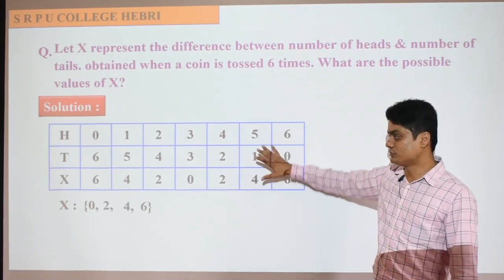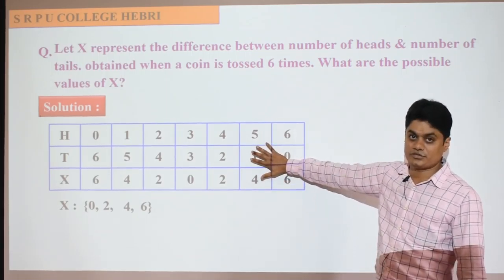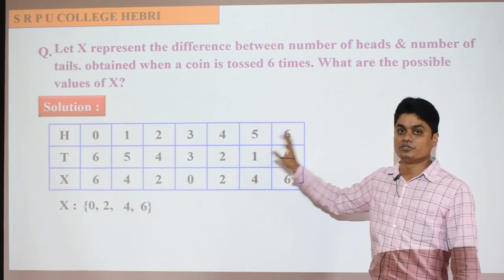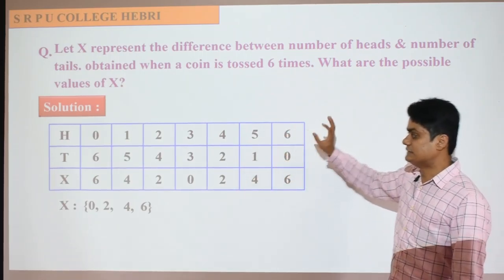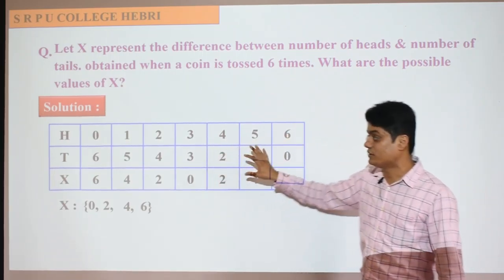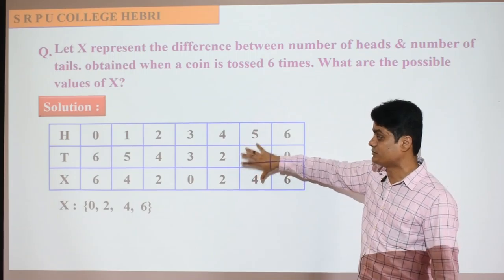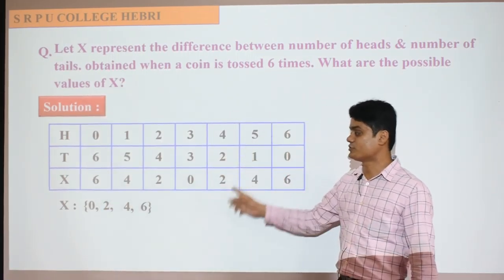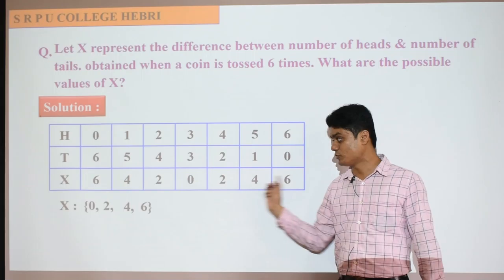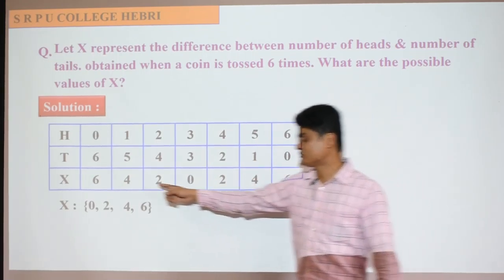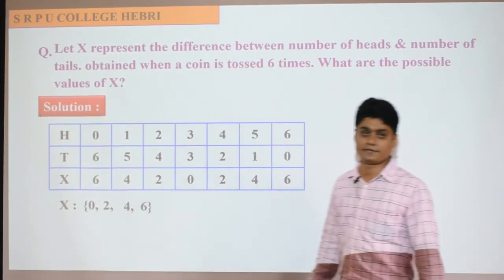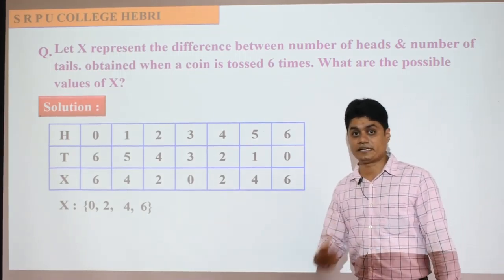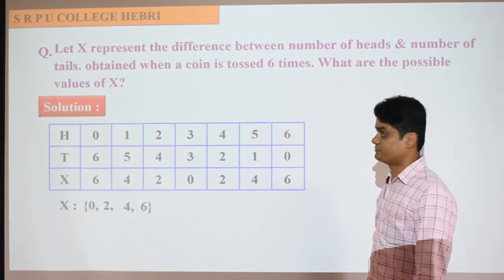This is not a probability distribution — we did not write probabilities anywhere. We wrote the table only to easily calculate the differences. This gives us the random variable of this random experiment. I hope you understood what is meant by the random variable of a random experiment.